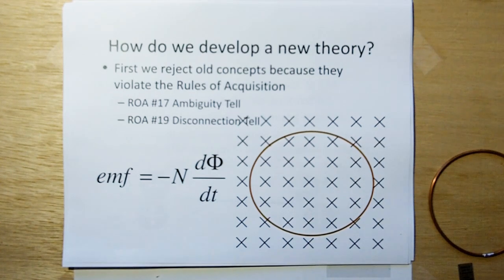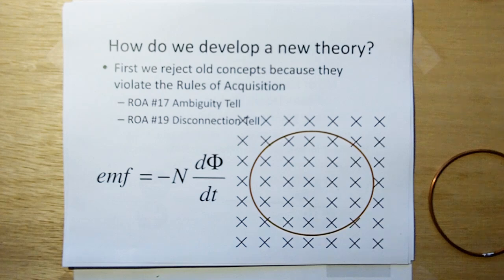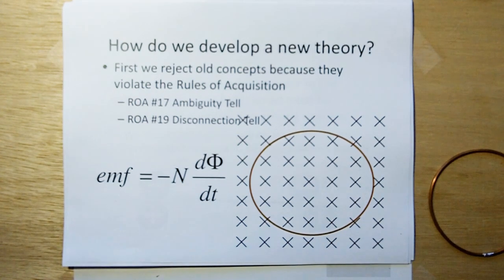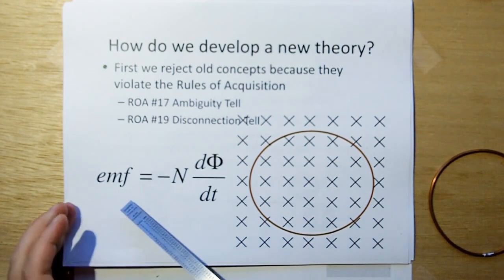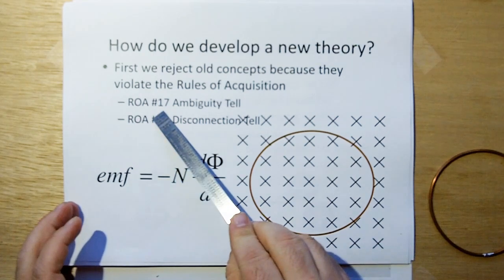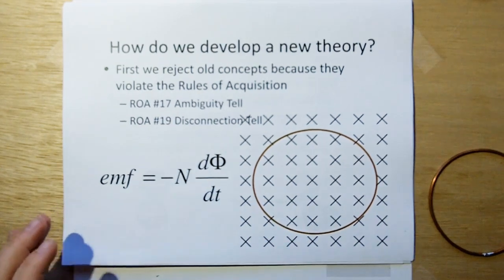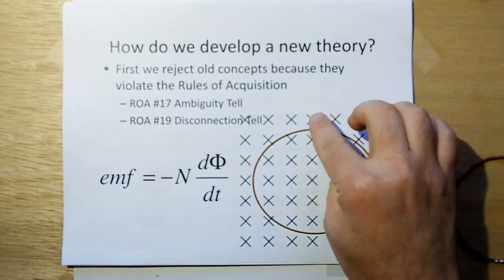So how do we develop a theory, a new theory? Well, first we can reject the old concepts because they violate the rules of acquisition. For example, it violates, Faraday's law violates rule of acquisition number 17, which is the ambiguity tell. Well, how does that apply here?